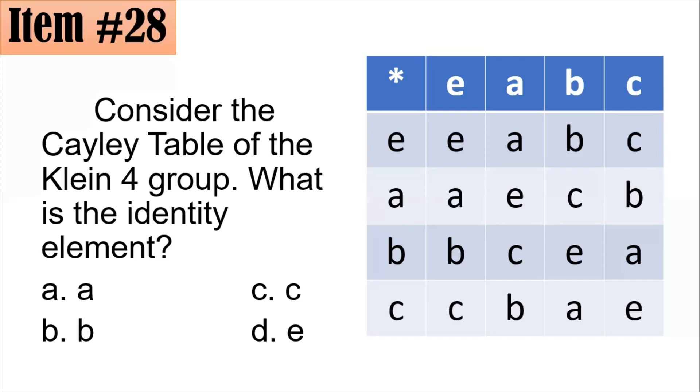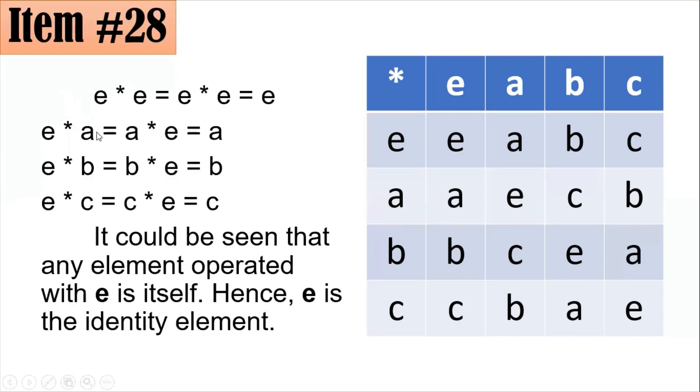When we speak about the identity element, in this case, you could see that if you operate E with A. If you have E star E, that's E of course. If you have E star A, that's equal to A star E, which is A. If I have E star B, it's the same as B star E, which is B. If I have E star C, it's equal to C star E, which is C. So it could be seen that any element operated with E is itself, which is in fact the abstract definition of your identity element. That is, if you operate the identity element with any other element, it will still give the other element. Hence, the identity element here is E.